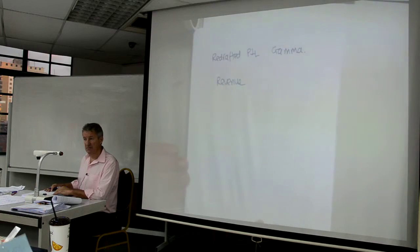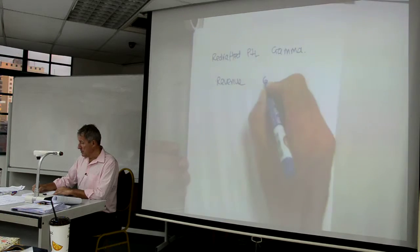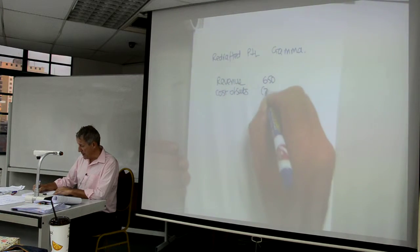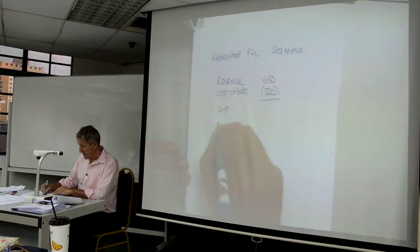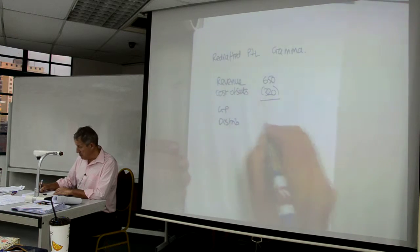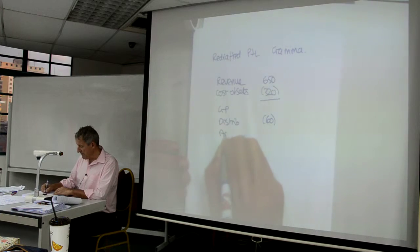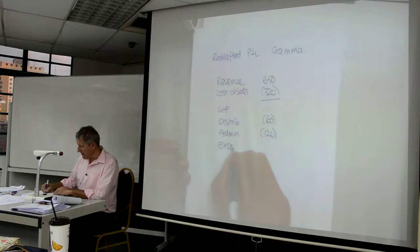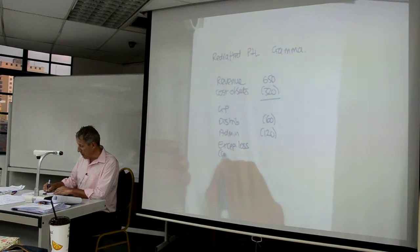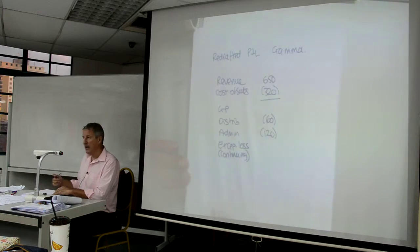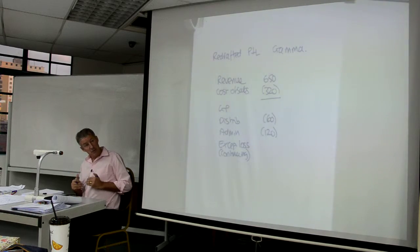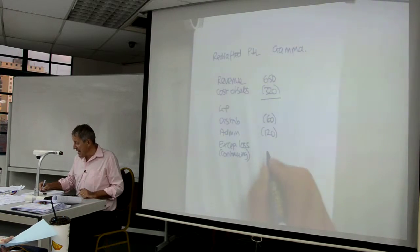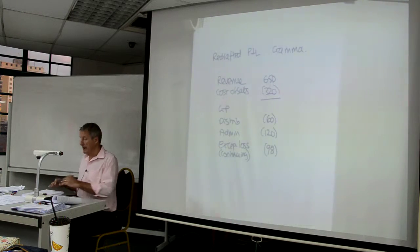I am totally and utterly ignoring Beta until the death. How much is revenue? $650. So revenue is $650. Cost of sales is $320. Distribution is $65. Admin is $120. Exceptional loss, hang on a minute. You only want the exceptional loss that relates to continuing items. So the loss on disposal has been dealt with elsewhere. The redundancy costs have been dealt with elsewhere. But the reorganization of the business at 98, that's part of the ongoing story.